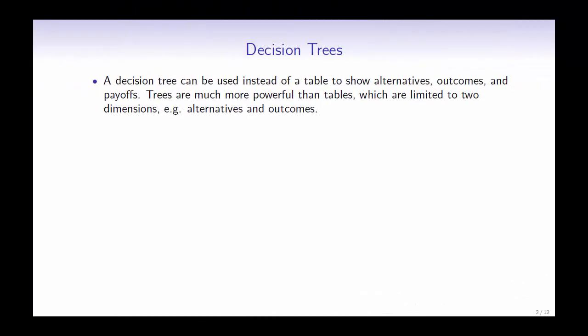A decision tree can be used instead of a table to show alternatives, outcomes, and payoffs. Trees are much more powerful than tables which are limited to two dimensions, for example, alternatives and outcomes.